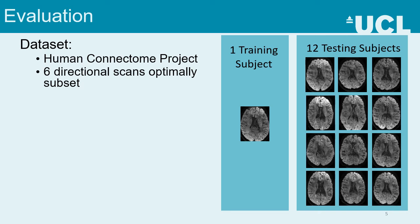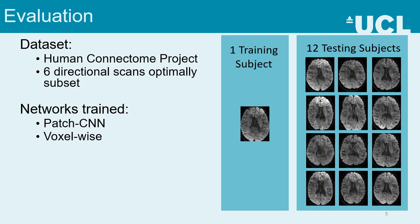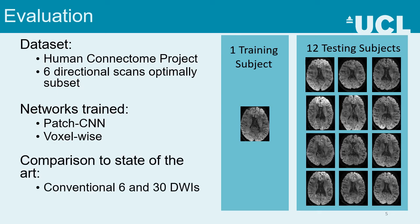Six-directional scans are simulated by finding the optimal six-directional subset from the original 90 B1000 images. To show the need for using a small patch-based architecture, we train a voxel-wise network to compare against. Comparison with current conventional fitting is shown at six diffusion-weighted images, as well as 30, because 30 diffusion-weighted images is considered the minimum number required for accurate estimation of the directional measures.